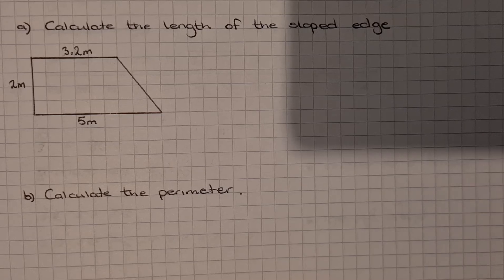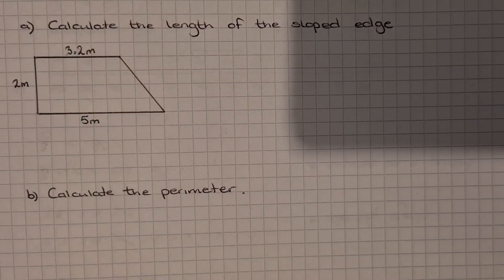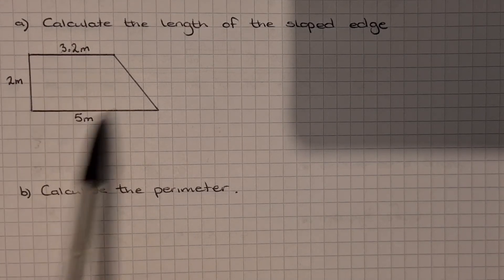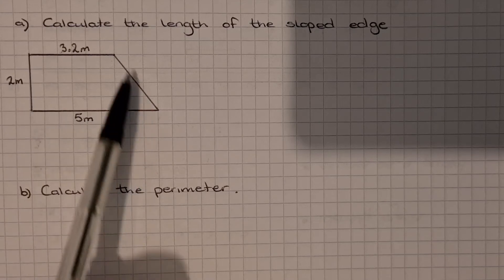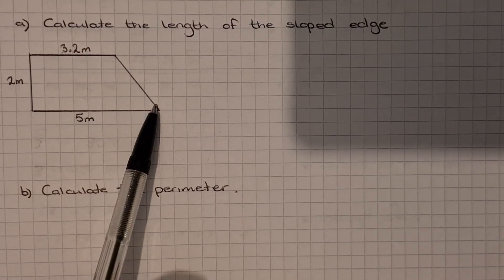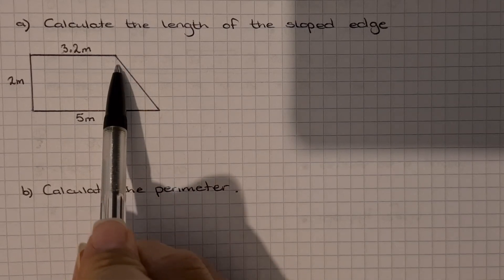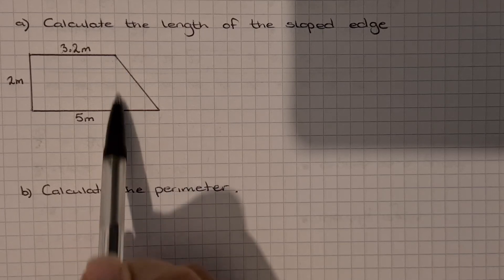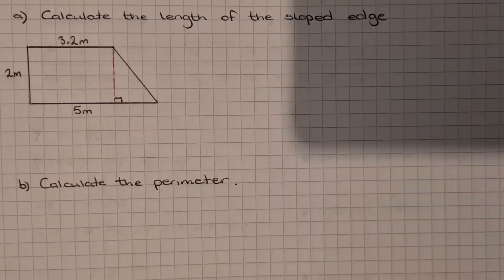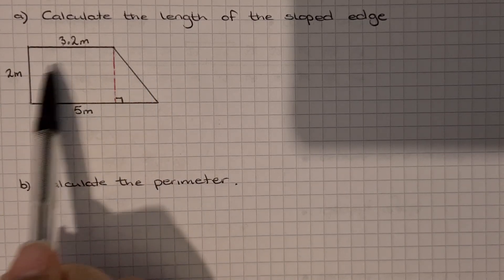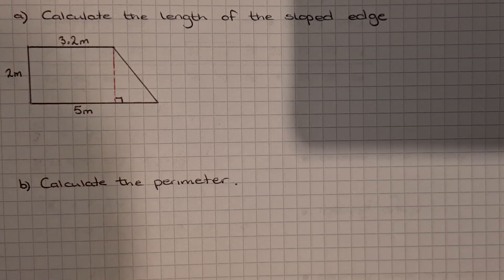We're going to do another question where it is a Pythagoras question but it might not seem like that when you start off. It's another part A and part B. Part A is to calculate the length of the sloped edge. We've got this shape — we know all the other sides but we've been asked to calculate the length of the sloped edge. We're looking for a right angle triangle, so we can draw a vertical line down here and that will create a right angle triangle on the end. We've got our right angle triangle but we don't know enough about it yet to use Pythagoras.